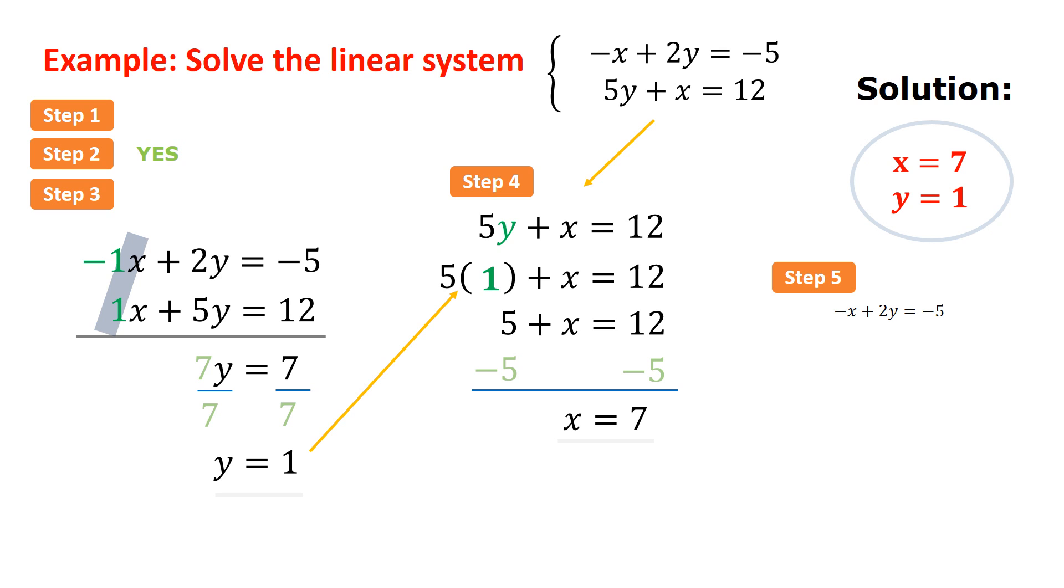Let's do a quick check for step 5. Substitute both values into the top equation. We get a true statement. Substitute both values into the other equation. It also gives us a true statement. And this confirms that (7, 1) is the solution.